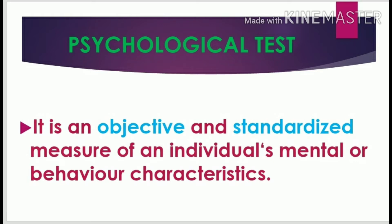There are a number of psychological tests used to measure different domains of psychological attributes. Some examples include: EPQR, that is Eysenck's Personality Questionnaire; RPM, that is Raven's Progressive Matrices; and GMAT, that is the General Mental Ability Test.